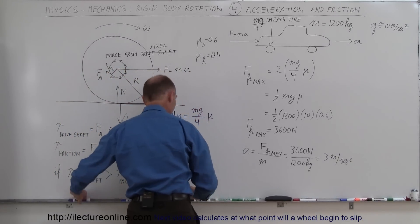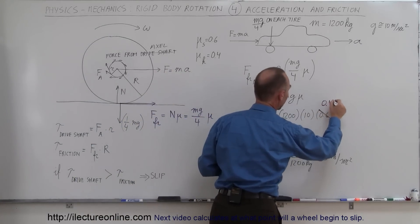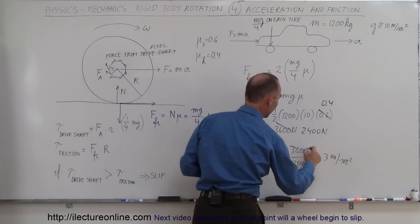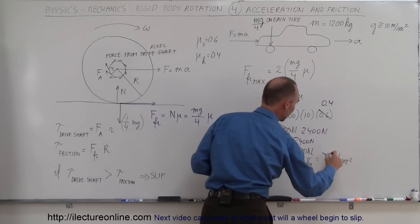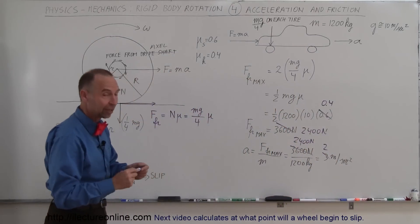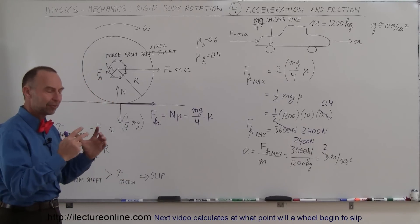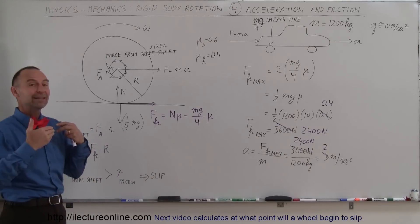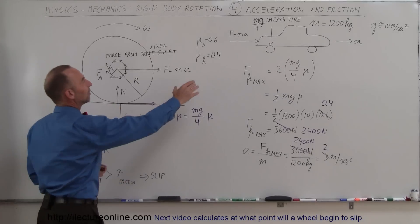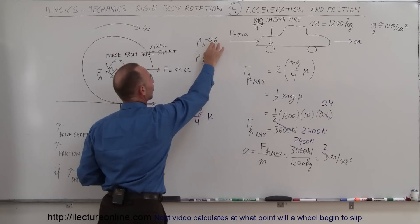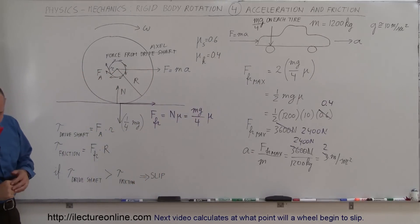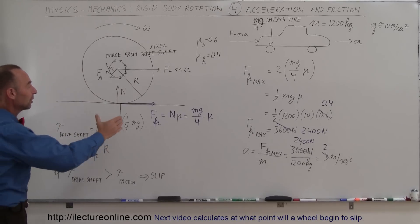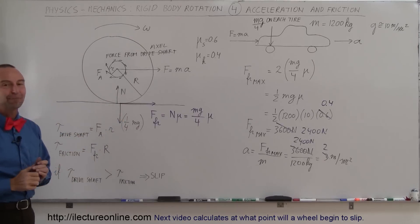If kinetic friction has a coefficient of only 0.4, the maximum friction force drops to 2400 newtons, and the maximum acceleration is only 2 m/s². So if you press hard on the gas with a powerful engine and it causes the tires to slip on the asphalt, the car's acceleration capability is reduced because kinetic friction is lower than static friction. That's how the car is driven forward by the friction between the road and the tires.